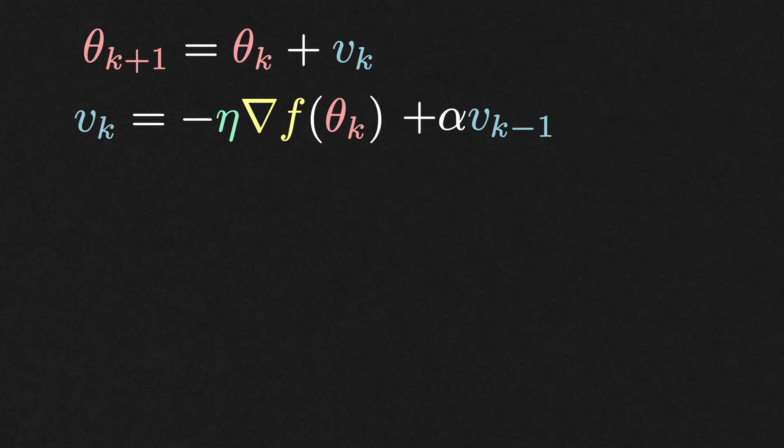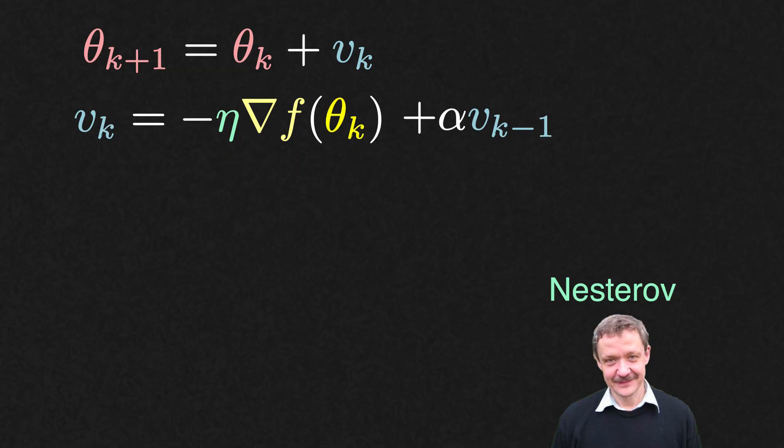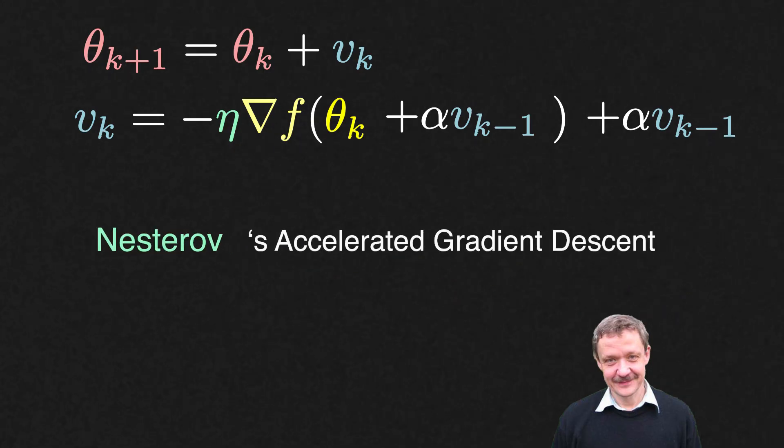Momentum gradient descent is actually useful well beyond quadratic functions. For example, Nesterov looked at smooth, strongly convex functions and developed a close variant of this method where instead of taking the gradient of the current iterate, you first extrapolate and compute the gradient at the extrapolated point. He showed that this method that now takes his name is faster than any other algorithm that relies solely on computing the gradient.